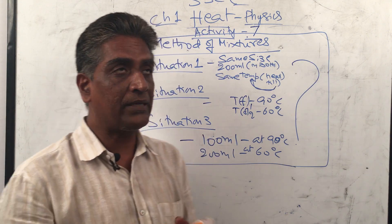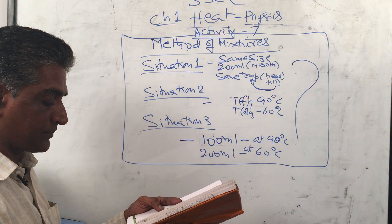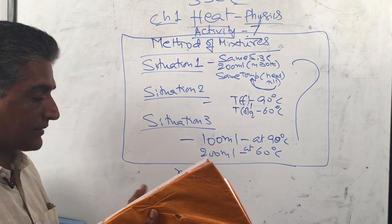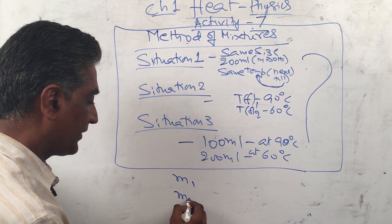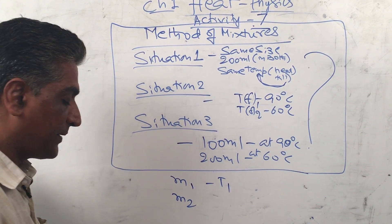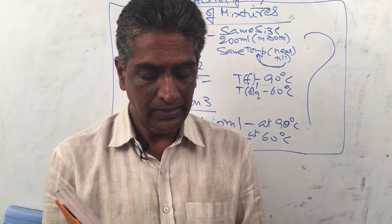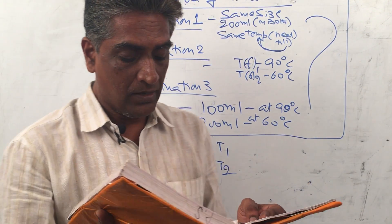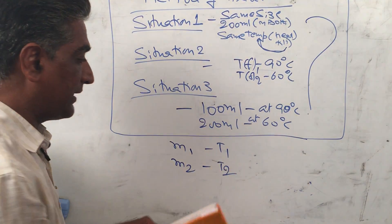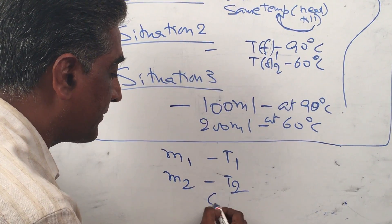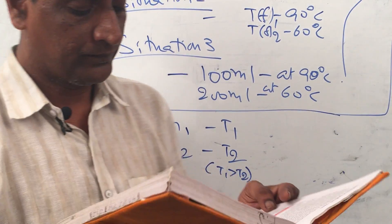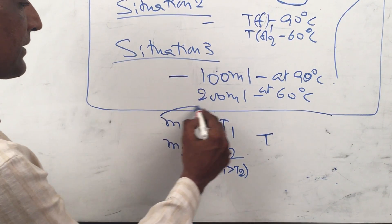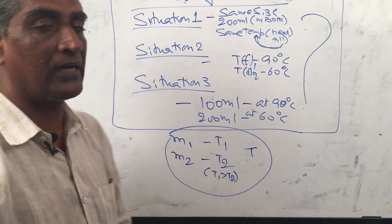Let the initial temperatures of the samples of masses m1 and m2 be T1 and T2. Let T be the final temperature of the mixture after mixing.